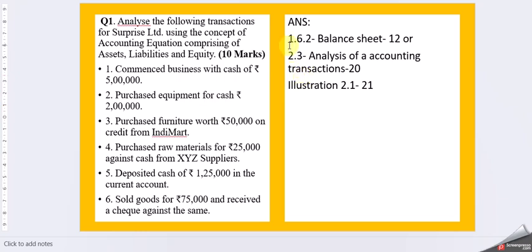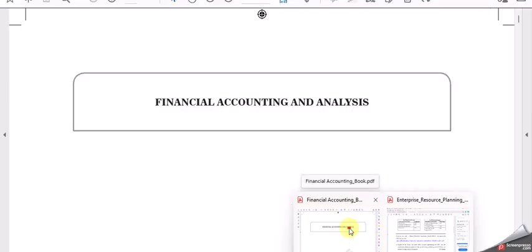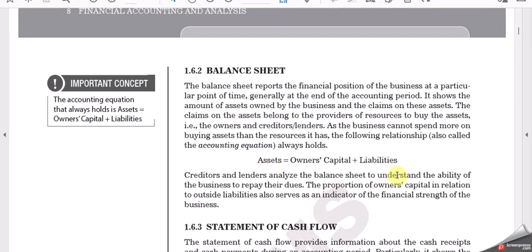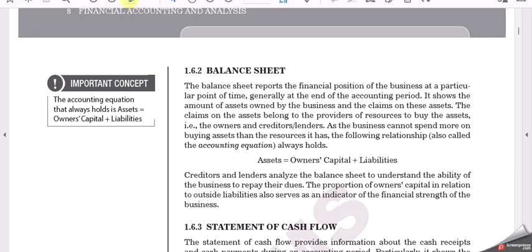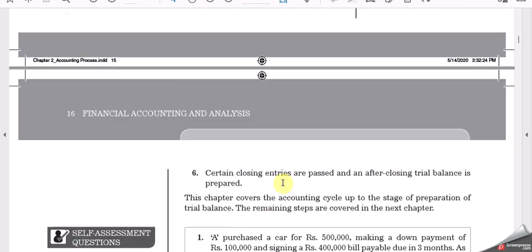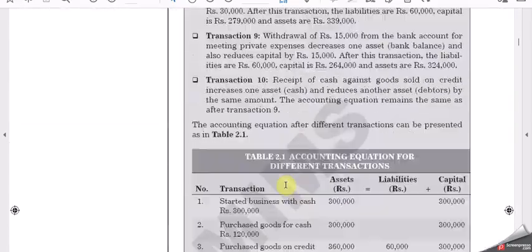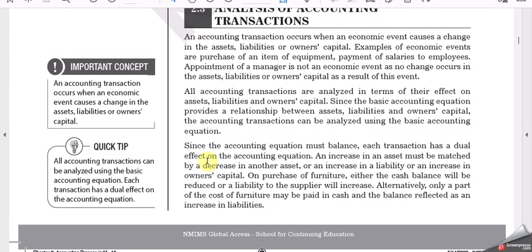We have the answer in chapter 2 and chapter 1. So chapter 1 is for the balance sheet. Let's go to chapter 1, page number 12. This is the balance sheet and here is your equation. Otherwise, you have the same equation in 2.3 also. Page number 20, chapter 2. Analysis of the accounting transaction. We have an equation here. I'll come back to the topic here.